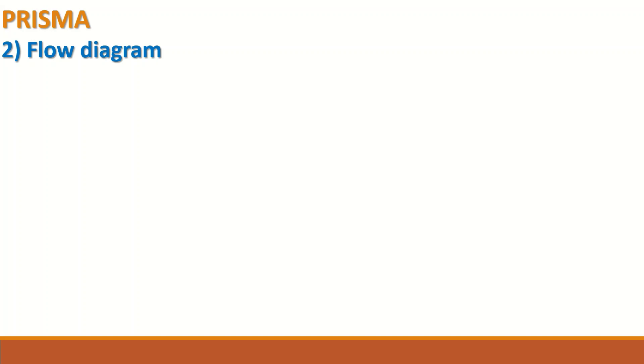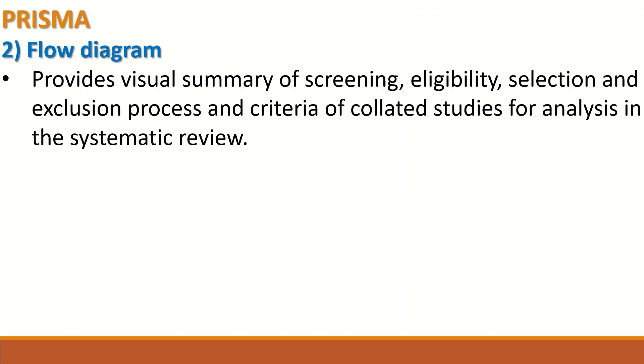The second part of PRISMA is the flow diagram. The flow diagram has four phases: the identification phase, the screening phase, the eligibility phase, and the included studies phase. These phases provide a summary of the screening, eligibility, selection, and exclusion process, and the criteria of collated studies for the analysis.